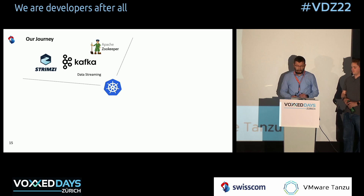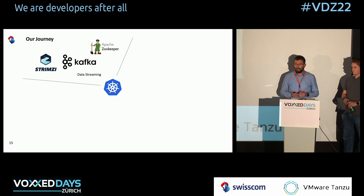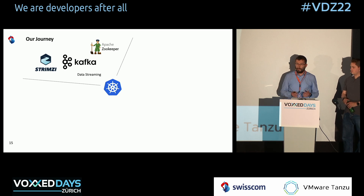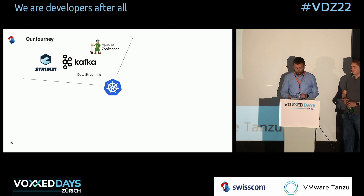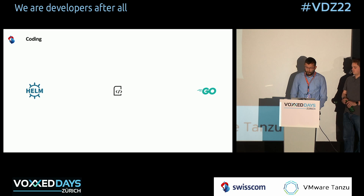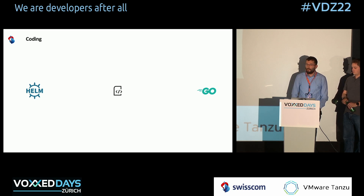Now we had our data streaming in place. We had to think about business logic and making the user experience much easier for customers — both end customers and cloud services pushing events into the data streaming solution. For that, we had to code Golang applications with custom development and expose APIs to the most important functionalities of our service.